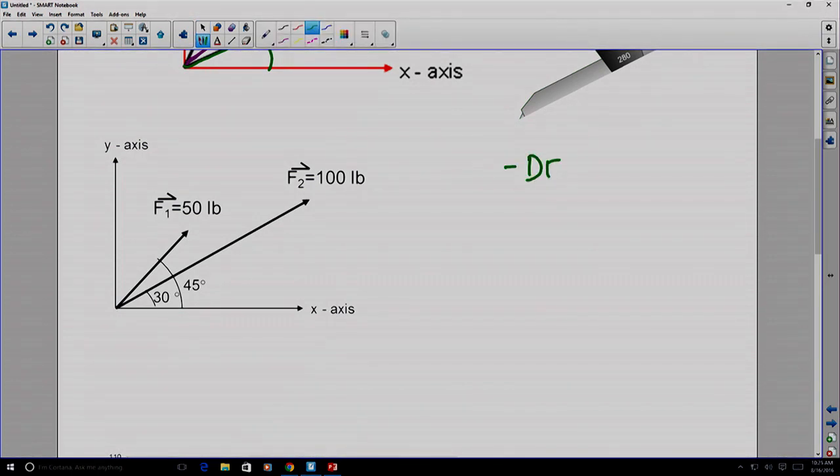First, we define our basis. Because we just saw that we can add vectors in a Cartesian basis. So we define a Cartesian basis here. You see there's an x-axis and a y-axis that are perpendicular defined here.